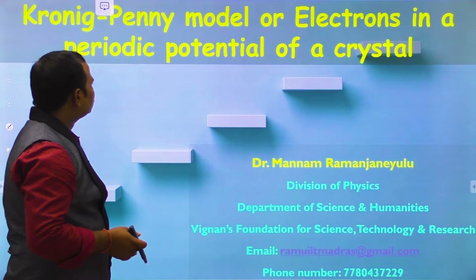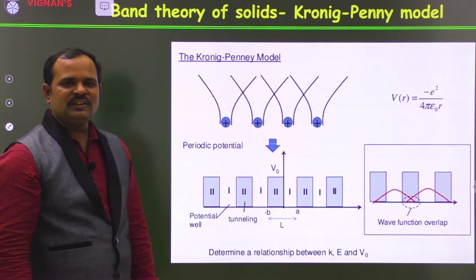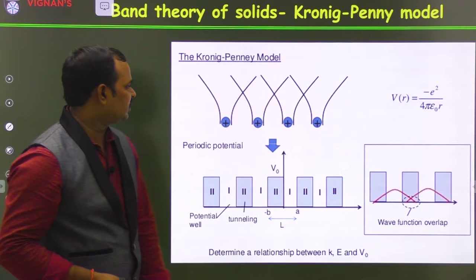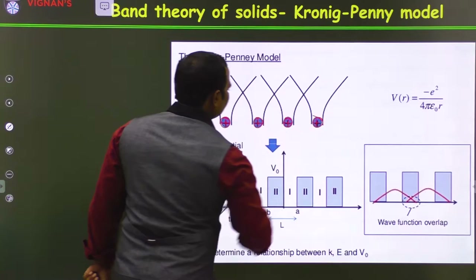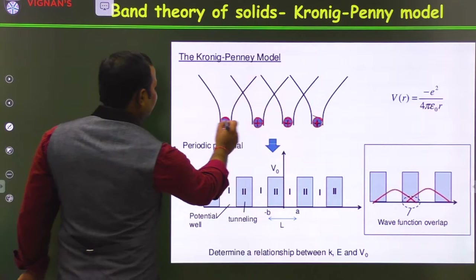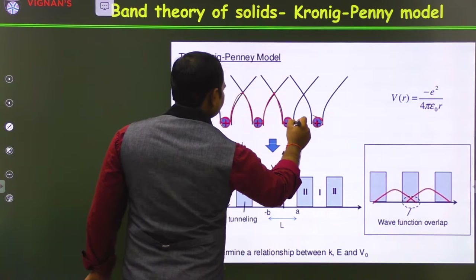In this lecture we will see the Kronig-Penney model to explain electrons in a periodic potential of a crystal. As we already know, electrons in a real crystal will move under a periodic potential. As shown here, this is a metal ion. When an electron is near to the metal ion it will have zero potential, and in between two metal ions the potential will be maximum.